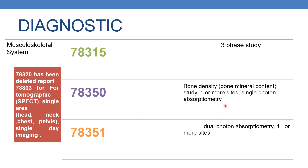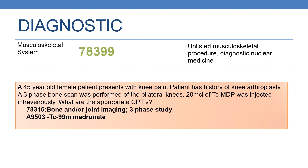The final code is 78399, which is the unlisted musculoskeletal procedure, diagnostic nuclear medicine. By this, we complete the nuclear medicine course for musculoskeletal system.